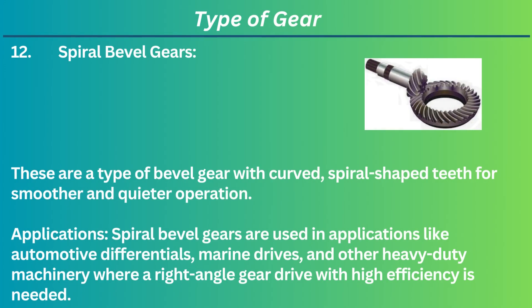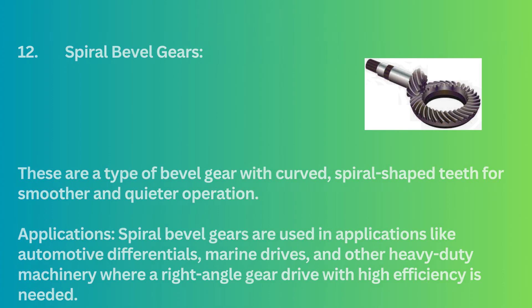12. Spiral bevel gears. These are a type of bevel gear with curved, spiral-shaped teeth for smoother and quieter operation. Applications: Spiral bevel gears are used in applications like automotive differentials, marine drives, and other heavy-duty machinery where a right-angle gear drive with high efficiency is needed.